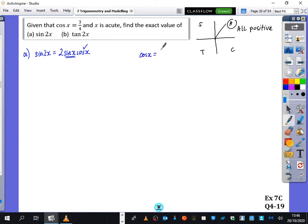If cos x is equal to 3 quarters, well, we know that sine squared x is 1 minus cos squared x. So that's going to be 1 minus 9 over 16, which is 7 over 16. That's what sine squared x is.